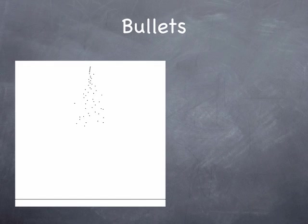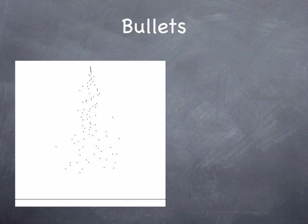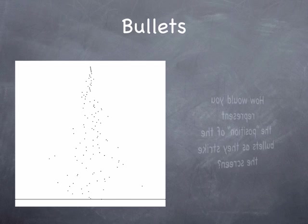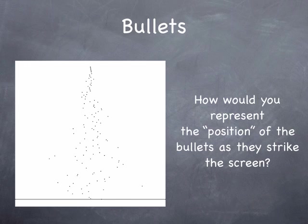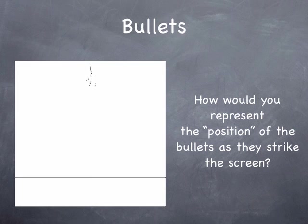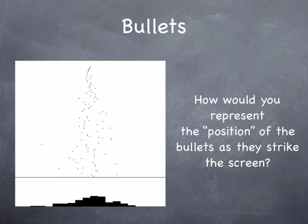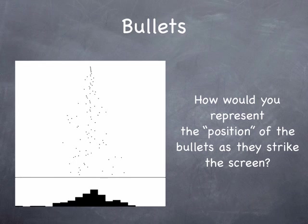Let's talk about an experiment with bullets. We fire bullets at an armored barrier of some kind and watch them hit various places. What I'd like you to do is think about how you'd represent the position of the bullets as they strike the screen. Go ahead and stop the podcast and make a little sketch. Then we'll watch again as the bullets hit the screen, and you'll notice this time that there's a histogram.